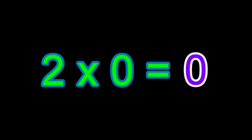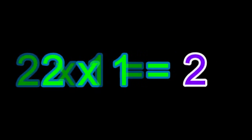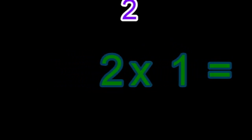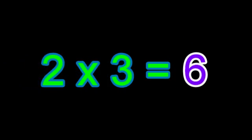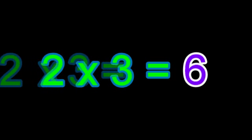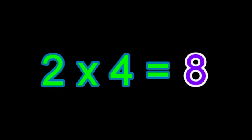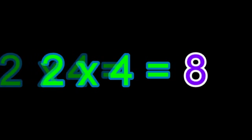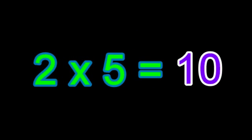2 times 0 equals 0. 2 times 1 equals 2. 2 times 2 equals 2. 2 times 3 equals 6. 2 times 4 equals 8. 2 times 5 equals 10.